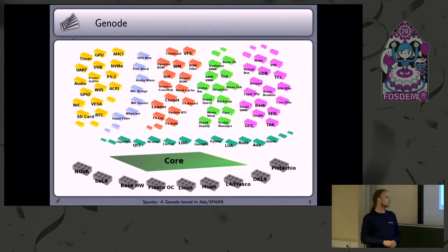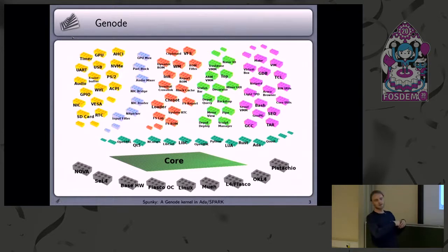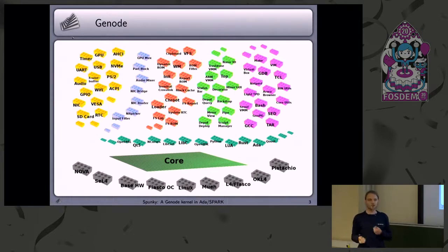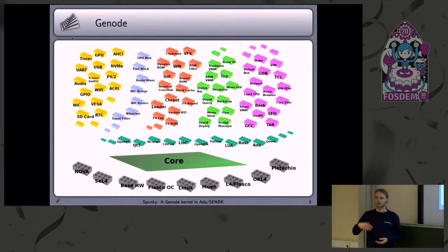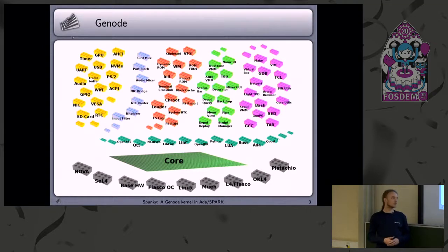Once you decide to switch, on top of it you have a vast collection of components that you can put together like Lego bricks to create your own individual system. This individual system can scale from embedded systems up to desktop systems. In our office, we actually use our own desktop system built on Gnode for working.